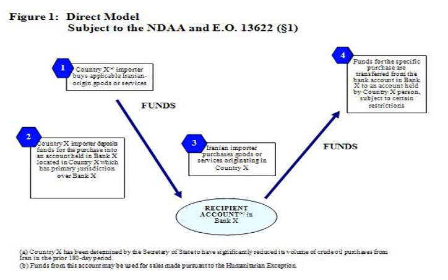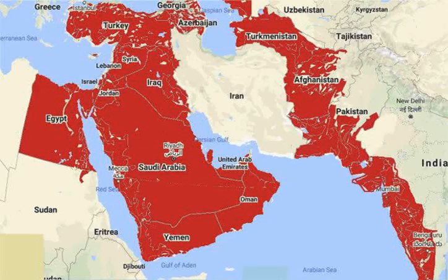Iranian support for the Shiite militias in Iraq and the Houthis in the Yemen civil war are also in contention. U.S. sanctions can be imposed under the National Emergencies Act. Declarations under NAR and IAEPA must be renewed annually to remain in effect. Another sanctions law is the Countering America's Adversaries Through Sanctions Act of 2017.